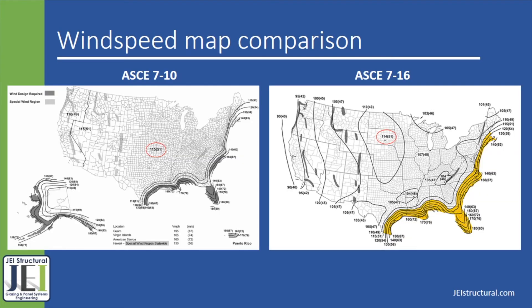This is a comparison of the wind speed maps of the ASCE 7-10 on the left and the ASCE 7-16 on the right, both for risk category 2 buildings. The wind pressures within the continental US have overall been reduced. Per the 7-10, the wind speed for most risk category 2 buildings within the US is 115 miles per hour. However, in the ASCE 7-16, it's a maximum of 114 miles per hour and then gradually drops off in every direction except for the coastal pressures on the east, which are shaded in yellow — and those coastal pressures have not changed from the ASCE 7-10. It's also worth noting that Hawaii and Alaska received very detailed wind speed maps in the 7-16, which are not shown.